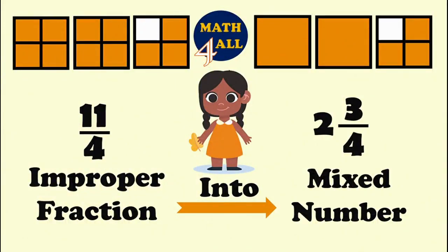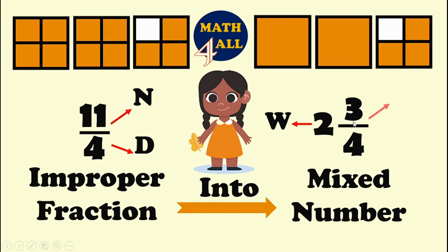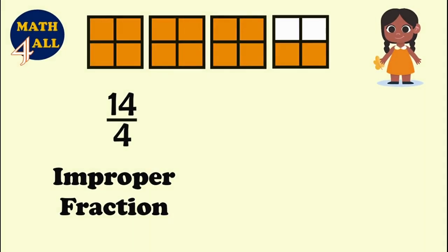Hi, today let's learn how to convert an improper fraction — which consists of a numerator and denominator — into a mixed number, which consists of a whole number, numerator, and denominator. As you can see, both represent the same value. Let's start.